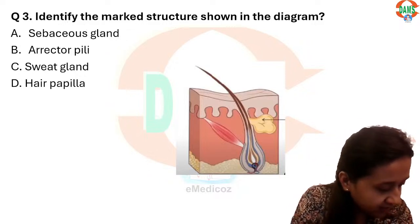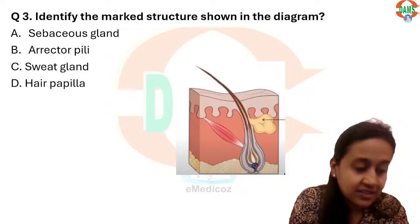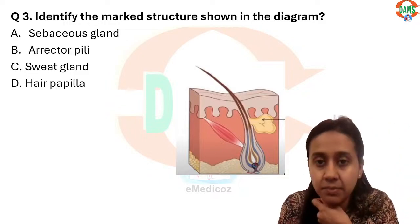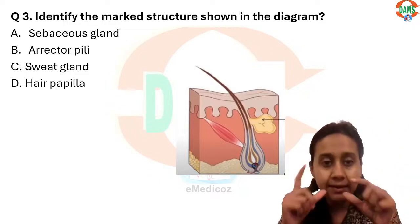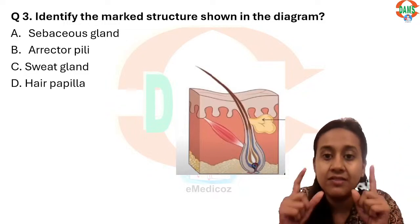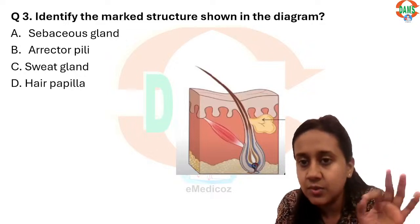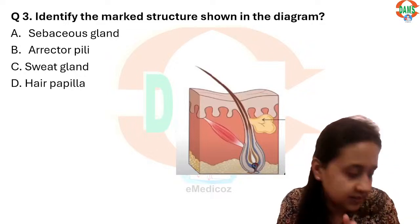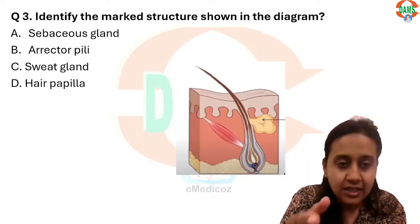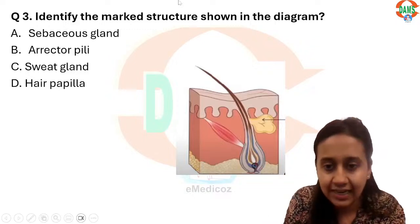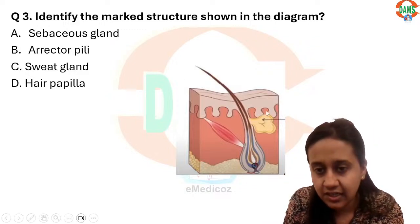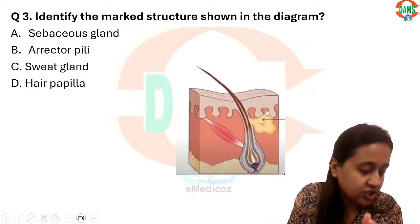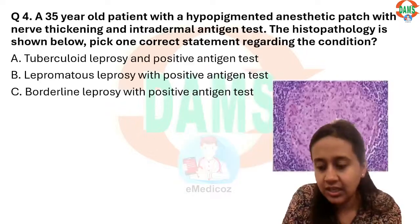One student said the options included arrector pili muscle, sebaceous gland, eccrine gland, and apocrine sweat glands. Even so, the answer remains sebaceous gland because that is the very characteristic structure shown attached to the hair follicle in that image. Apocrine glands are located deeper and have a long duct opening above the duct of the sebaceous gland.